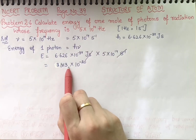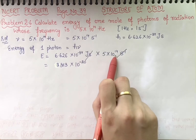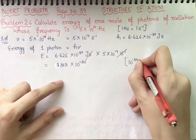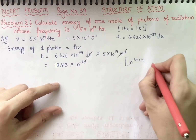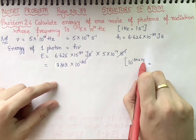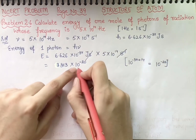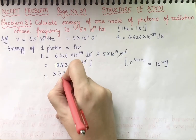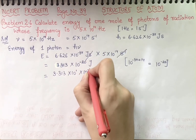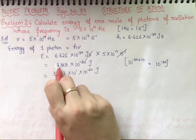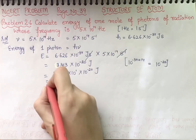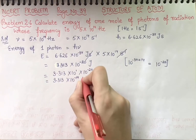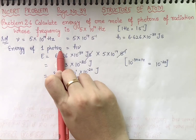Multiplying 6.626 by 5 gives 33.13. Combining the powers: 10⁻³⁴ × 10¹⁴ = 10⁻²⁰. So we have 33.13×10⁻²⁰ J, which simplifies to 3.313×10¹ × 10⁻²⁰ = 3.313×10⁻¹⁹ J. This is the energy of one photon.